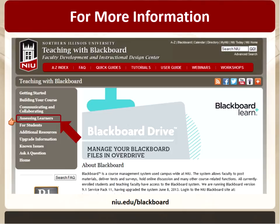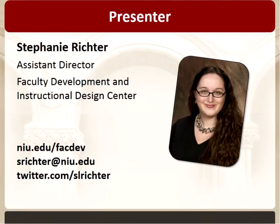If you make that letter grade column with primary display text and enter the letters, then you can set that as the external grade with the green check mark and that will go to MyNIU. If you have any more questions, feel free to contact me. Thank you so much for joining me today — we'll see you next time.